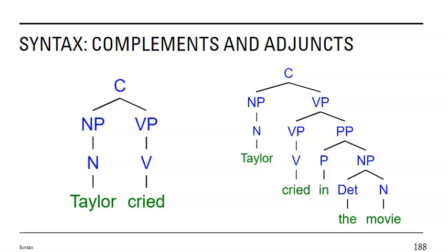Taylor cried in the movie. We might want to add a prepositional phrase to make the sentence more interesting. We've already talked about that Taylor cried is grammatically complete. So, we have a verb phrase, a noun phrase, verb phrase that represents that that's all that's needed to create a grammatically correct sentence in English. In the movie is not grammatically necessary. It's an adjunct. It's added on to modify where the crying took place.